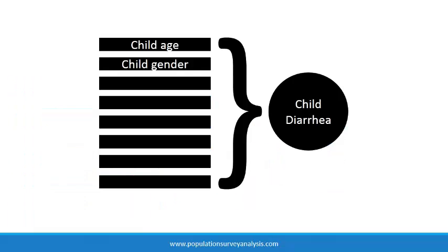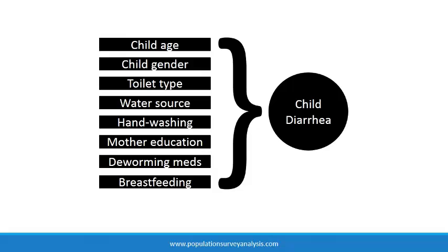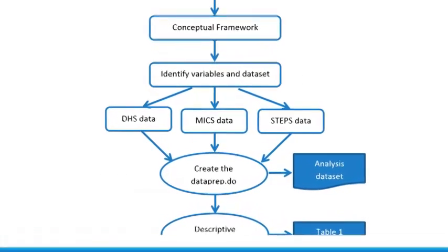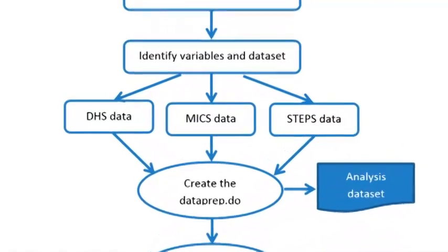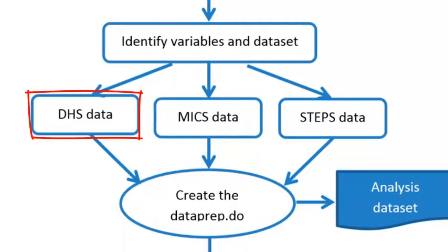Development of a conceptual framework helps you identify which variables you need to answer the research question and to decide which survey datasets to use. Household survey datasets tend to be very large with thousands of variables, so it is helpful to document the key variables at this early stage before you open the dataset and get sidetracked. Many surveys are conducted regularly across multiple countries, including the Demographic and Health Surveys supported by USAID, the Multiple Indicator Cluster Surveys supported by UNICEF, and the STEPS Survey on Chronic Disease supported by the World Health Organization. Once you know which variables you need and the timeframe and geographic coverage of your research question, it will be straightforward to identify which existing survey dataset is best suited for your research.